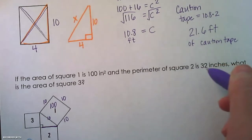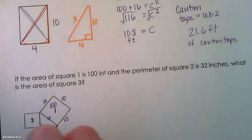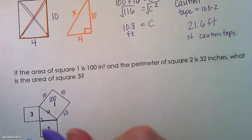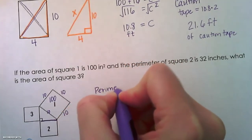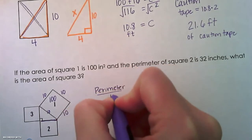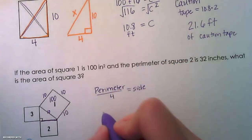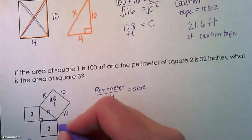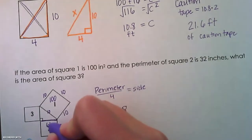The perimeter of square two is 32 inches. Recall that the perimeter is the distance around a square, so we take the perimeter and divide by four to get the side length. 32 divided by four equals eight — that is the side of square two, which means the area of square two is going to be 64.